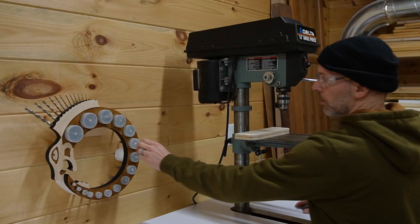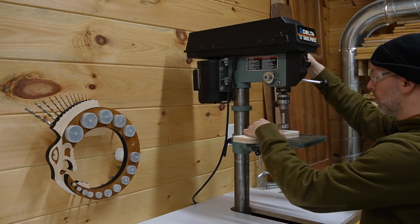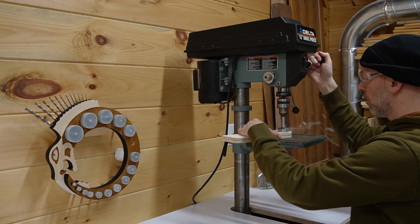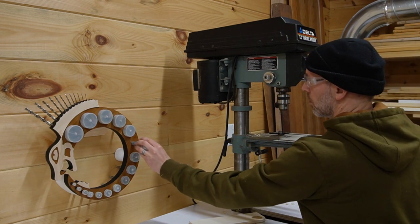Once everything was dry, we loaded the Ouroboros up with all the bits, placed it on the wall-mounted cleat, and put it to the test. It's really simple to grab the size you need, and the fact that it's on a French cleat means that it can be easily taken off the wall and placed on a work surface when needed.